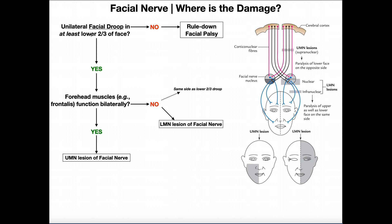The first thing we need to ask ourselves is: do we have unilateral face droop in at least the lower two-thirds of the face? It could be all of the face, but it at least has to be two-thirds to be sure you've got a facial palsy. If the answer is no, you can pretty well rule out facial palsy. If the answer is yes, we then need to ask: are the forehead muscles functioning bilaterally?